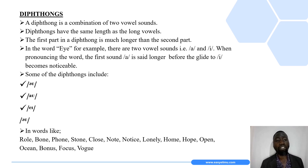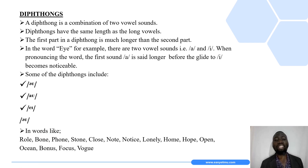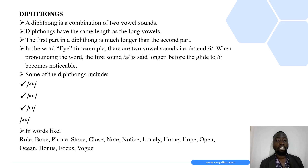Something interesting about diphthongs is that when pronouncing a diphthong, the first part or first sound is much longer than the second part or second sound. Let's look at the word 'I' as an example. In the word 'I', there are two vowel sounds: the sound /a/ and the sound /e/. When pronouncing the word, the first sound is said a bit longer before we glide to the vowel sound /e/. The /a/ sound is said longer, and we only notice the /e/ sound after saying the first sound for quite some time.